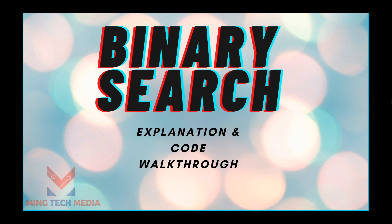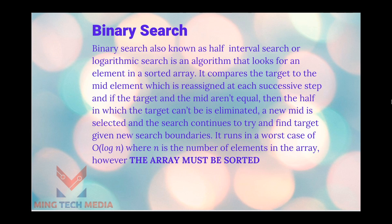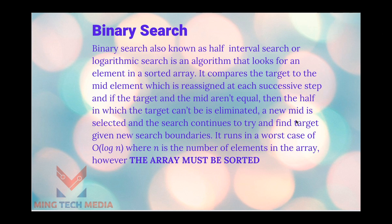Binary search, also known as half-interval search or logarithmic search, is an algorithm that looks for an element in a sorted array. You're given a target — some number to find in the array — and it compares that target with the middle element, which is reassigned at each successive step if it doesn't find the target at that middle position. At each step, we check if the target and the mid are equal, and if they aren't, one half of the array is eliminated.